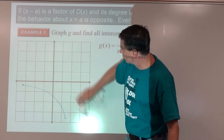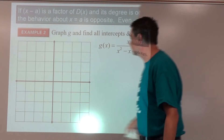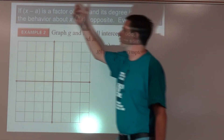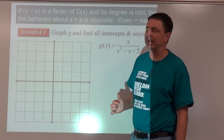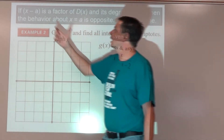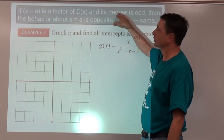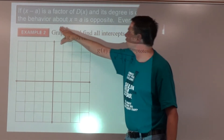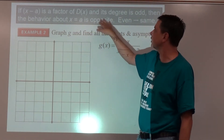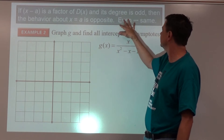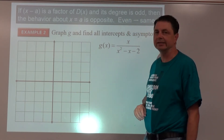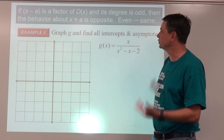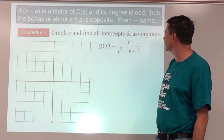Example number two. Some extra information: when looking at the denominator, if we find a factor whose multiplicity is odd, then the behavior about that asymptote is opposite sides. If the multiplicity is even, the behavior is the same on both sides. Let's see what that means in terms of the graph — graph g and find all intercepts and asymptotes.